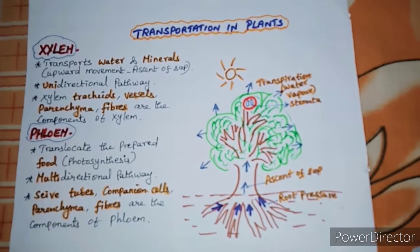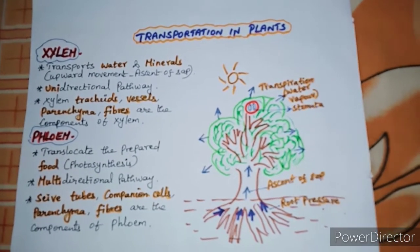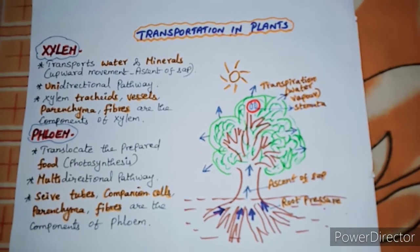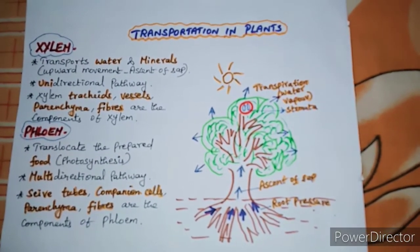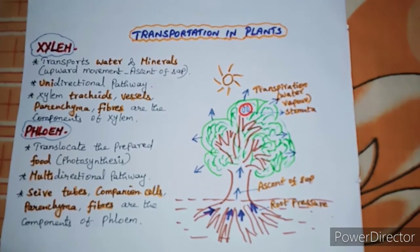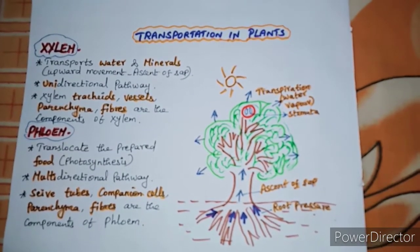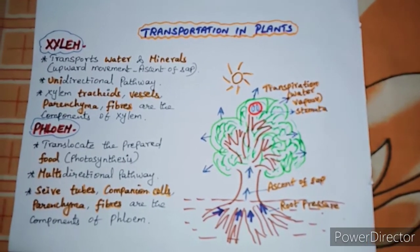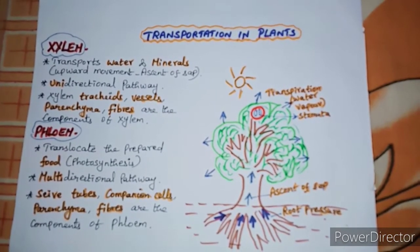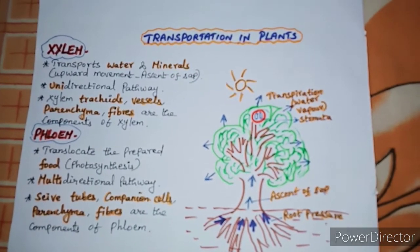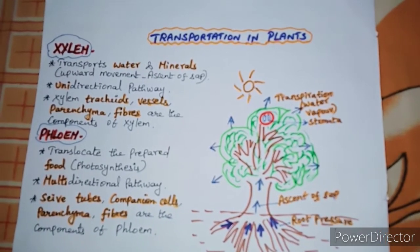Hi everyone, some students requested me to make a video on transportation in plants. First you should know what is transportation. In our body, after digestion, the absorbed food gets transported to different parts of the body through finger-like projections called villi, present in the small intestine. Even from the lungs, the oxygenated blood is supplied to different parts of the body through the aorta. By simple diffusion it is not very easy and it is not sufficient, because simple diffusion is sufficient for unicellular organisms since they have direct contact with the environment, but in multicellular organisms the body is made up of many cells.